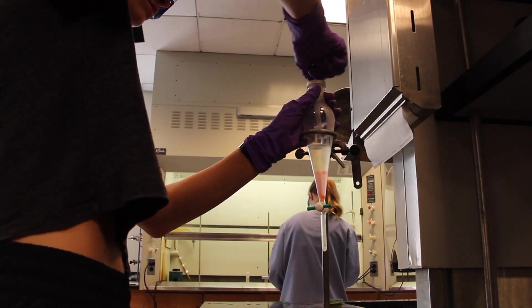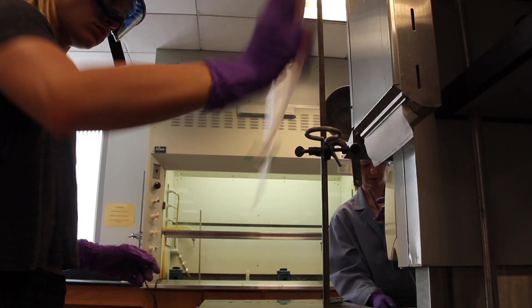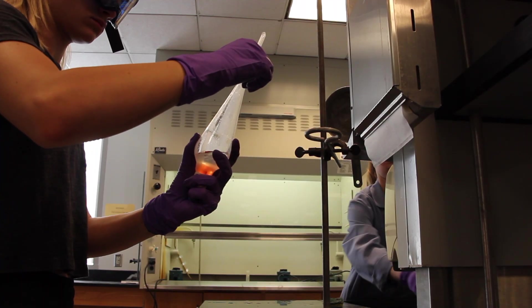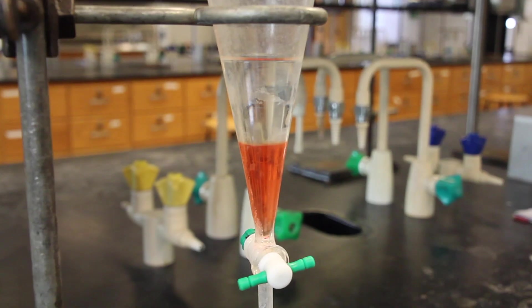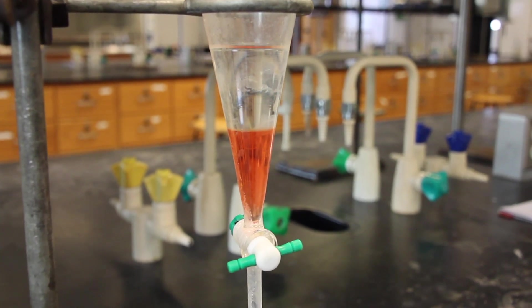Stopper the funnel and cautiously mix the contents. Vent the funnel pointing it away from your neighbor and then shake the mixture more vigorously with frequent venting. Replace the separatory funnel in the iron ring, remove the top stopper, and allow the layers to separate completely.